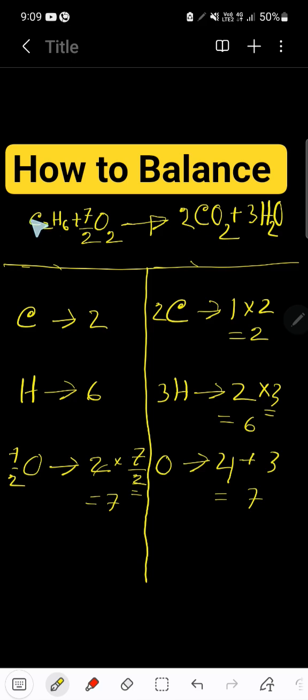To get whole numbers, multiply the entire equation by 2. We get 2C₂H₄, then 2 times 7/2 equals 7 for O₂, 2 times 2 equals 4CO₂, and 3 times 2 equals 6H₂O. This is the balanced chemical equation without any fractions.